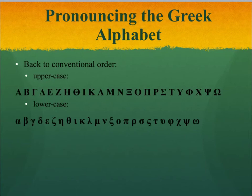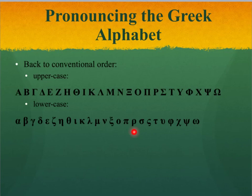And if you want to learn the alphabet song, it goes like this in Greek: Alpha, Beta, Gamma, Delta, Epsilon, Zeta, Eta, Theta, Iota, Kappa, Lambda, Mu, Nu, Xi, Omicron, Pi, Rho, Sigma, Tau, Upsilon, Phi, Chi, Psi, Omega.